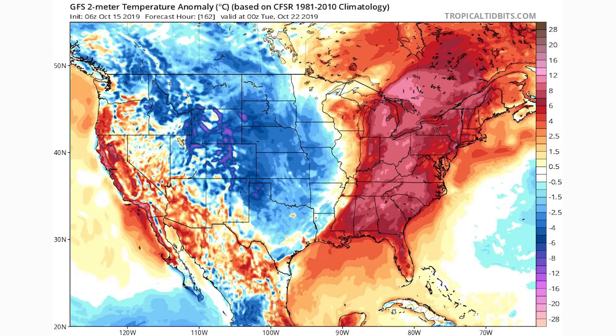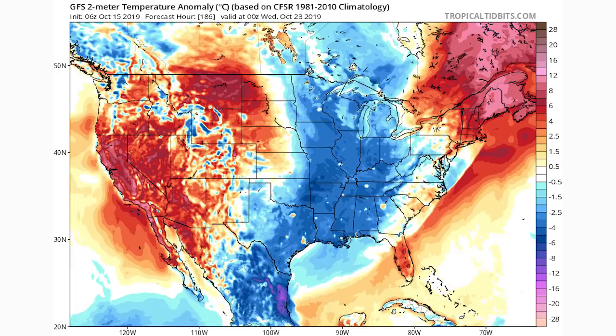Tuesday October 22nd: the warm is moving further east and the cold is entering more of the central United States rather than the far western regions. Wednesday October 23rd: cold is finally arriving back in the eastern United States, right over the east-central US — some Gulf states and Great Lakes states — but the east coast and New England are still warm. Most of the western United States is also quite warm by this time frame.